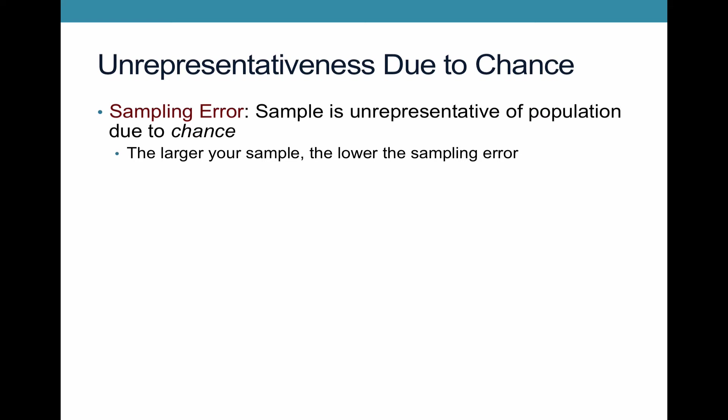The larger your sample is, the lower the sampling error is, and the bare minimum you need is 25. If you're collecting a sample of only 10 people, just by chance you might have a sample that isn't representative of the population. The law of large numbers tells us that as our sample gets larger, it's going to be more likely to be representative of the population.